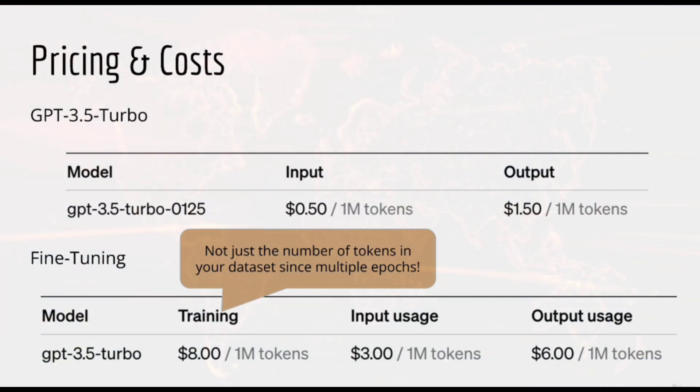Using your fine-tuned model is also more expensive. Input tokens cost $3 per million tokens, and output tokens cost $6 per million tokens.